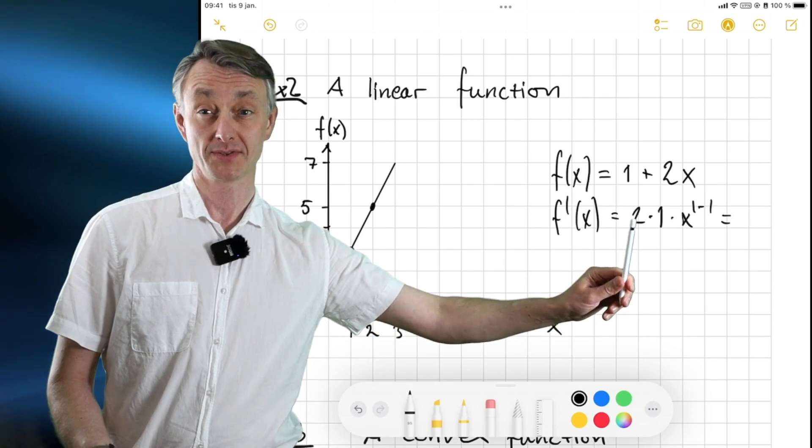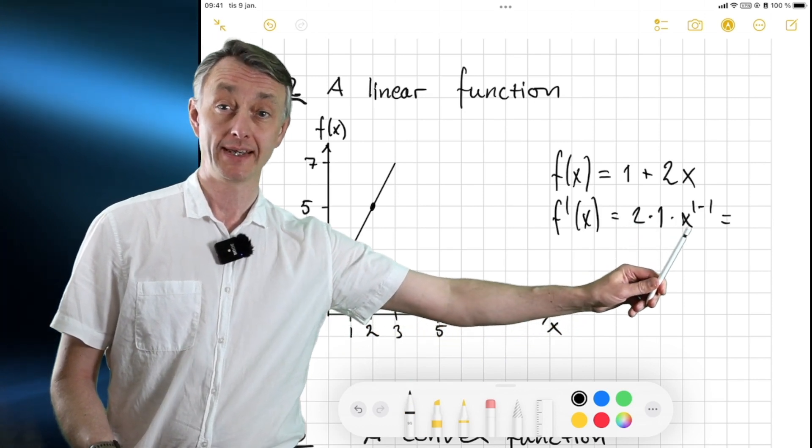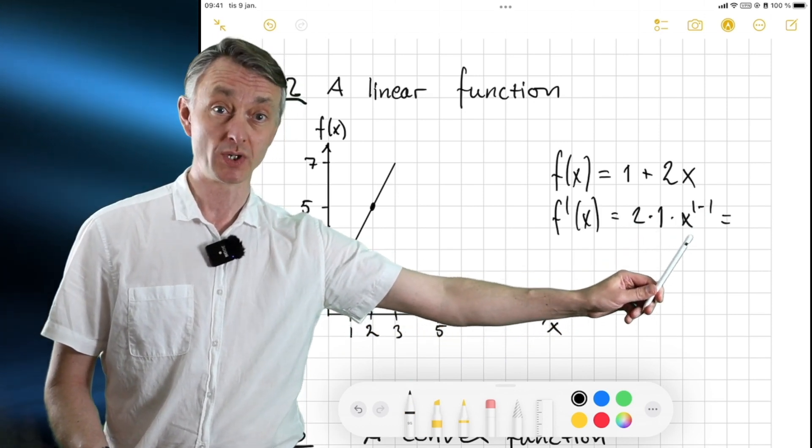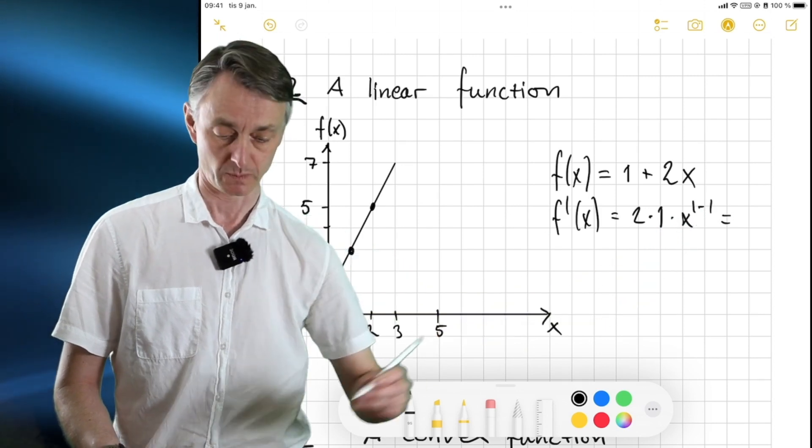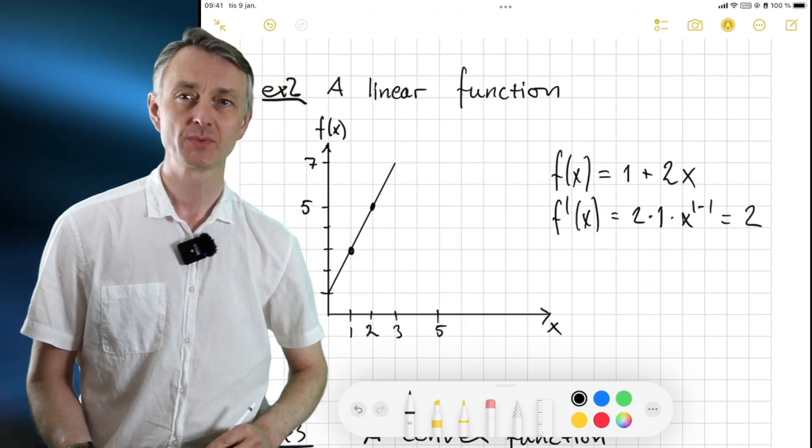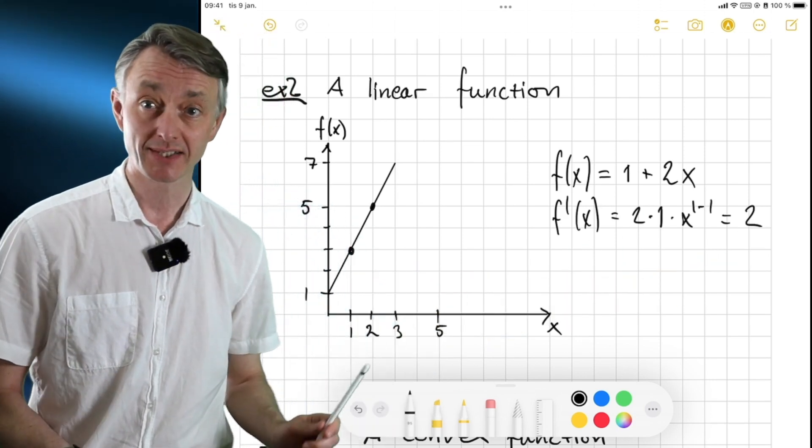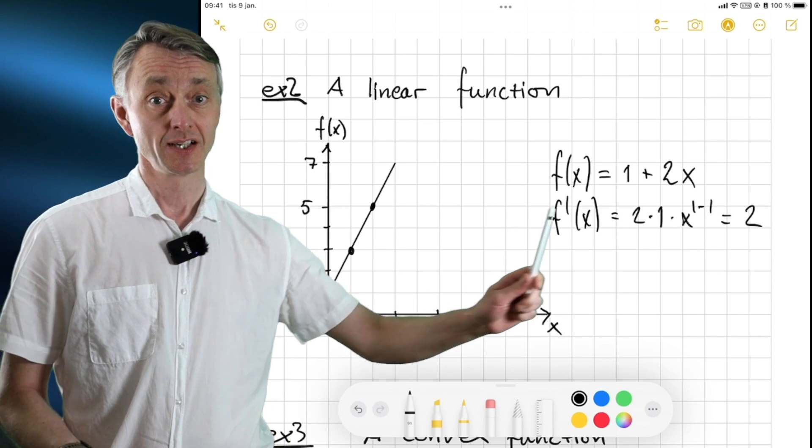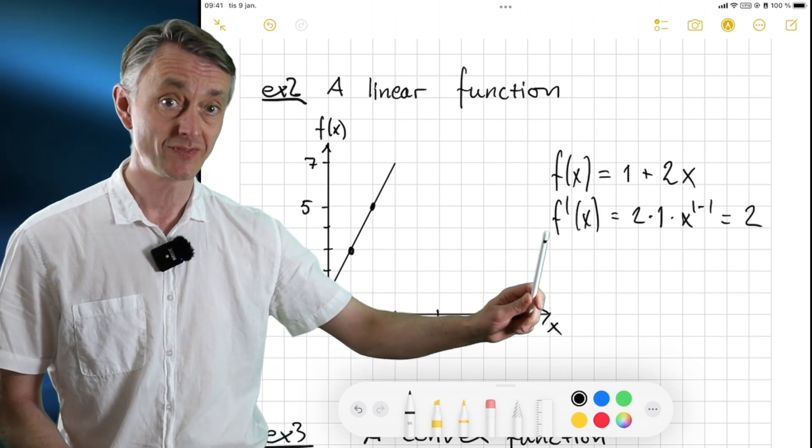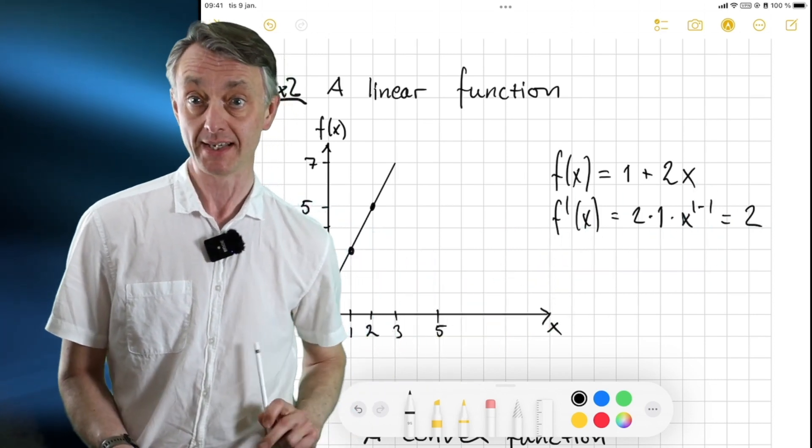And so there's a 2 here, a 1 here, x to the power of 0, which is 1. So it's 2 times 1 times 1, that is 2. So we see that the slope is indeed 2. And we can also note that it will be a constant slope, because the slope, i.e. the derivative, is constant. It's at 2.